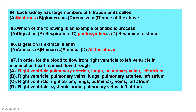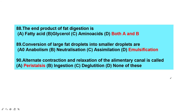Digestion is extracellular in all animals and amoeba. In order for blood to flow from the right ventricle to the left ventricle in the mammalian heart, it must flow through the pulmonary arteries, then to the lungs, then to the pulmonary veins, and then to the left atrium.